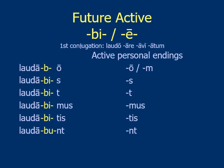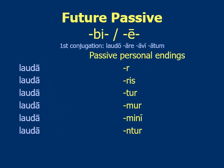How you translate the future active: just use the word 'will.' I will praise, you will praise, he/she/it will praise, we will praise, y'all will praise, they will praise.